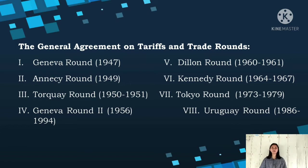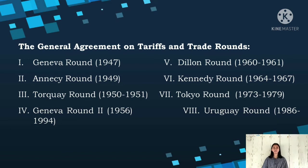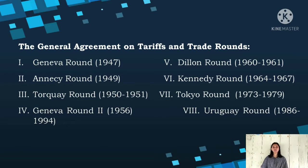The final and most complex round of GATT was the Uruguay Round, conducted from 1986 to 1994. This round involved 128 countries and focused on a wide variety of issues beyond reducing tariffs. It addressed intellectual property rights, agricultural subsidies, non-tariff barriers, trade in services, and established a dispute settlement mechanism to resolve trade disputes and prevent trade wars. The most significant outcome of the Uruguay Round was the agreement to establish the World Trade Organization or WTO.